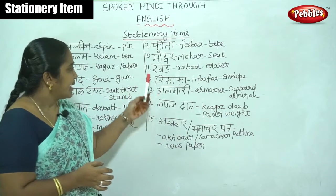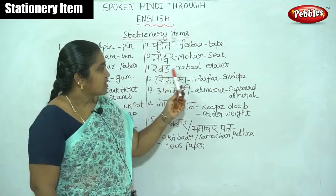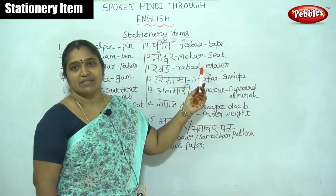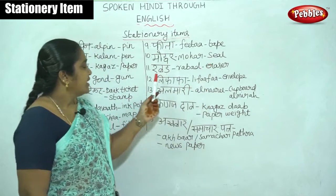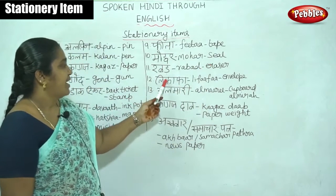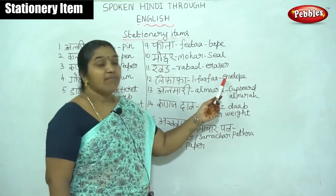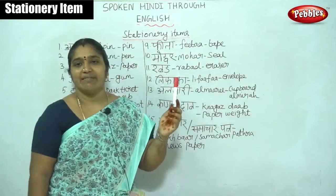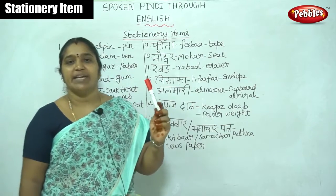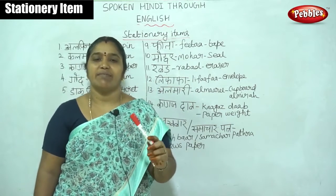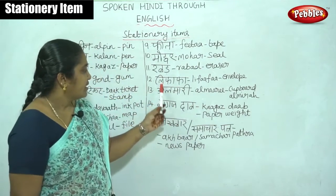Then rabbet. Rabbet is called eraser. Then lifafa. Lifafa is the envelope, cover. To post the letter, we need lifafa. Lifafa means envelope.